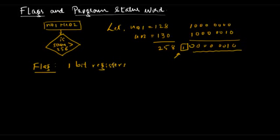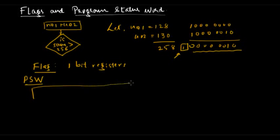The carry flag is not the only flag — there are some more flags, and all these flags are grouped together in a special function register called the Program Status Word, abbreviated as PSW. The Program Status Word is 8 bits long.